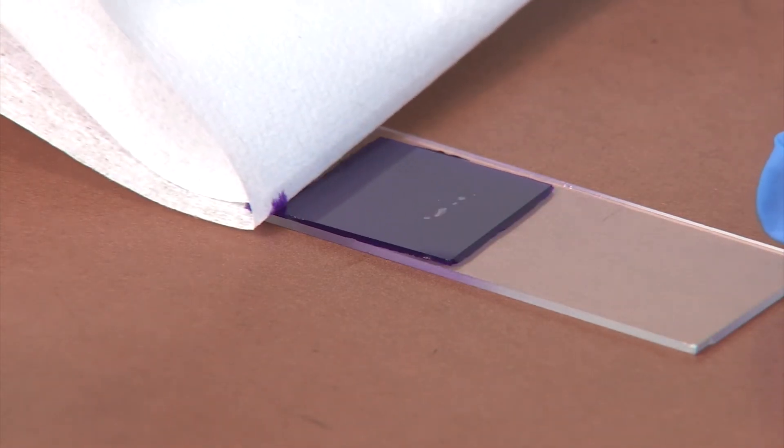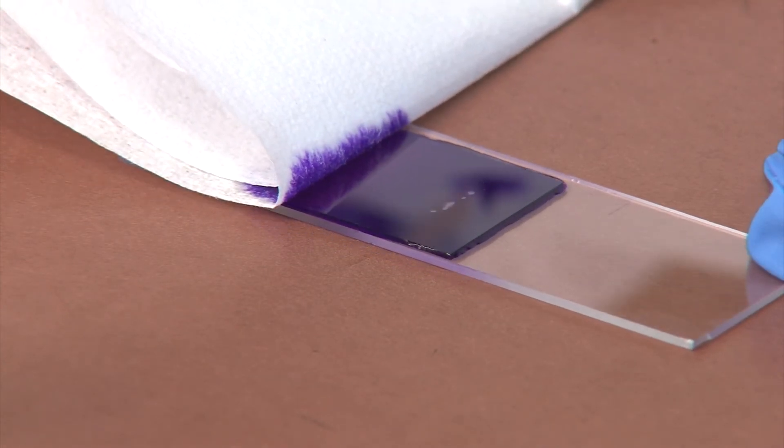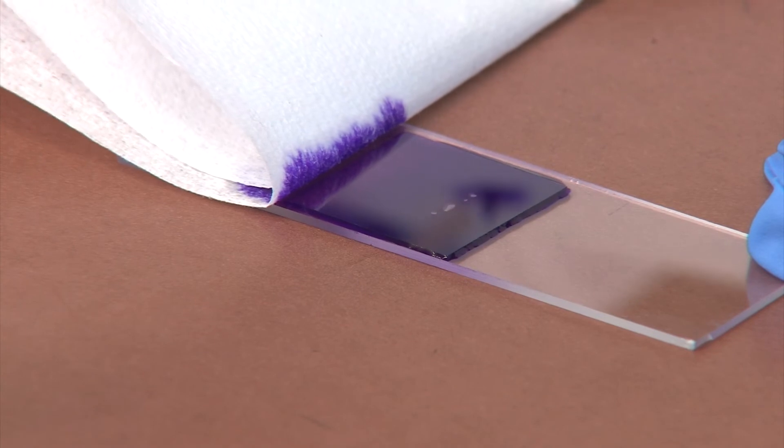If there is too much water and the cover slip is floating, touch the edge of a paper towel to the edge of the cover slip. This will absorb excess water.